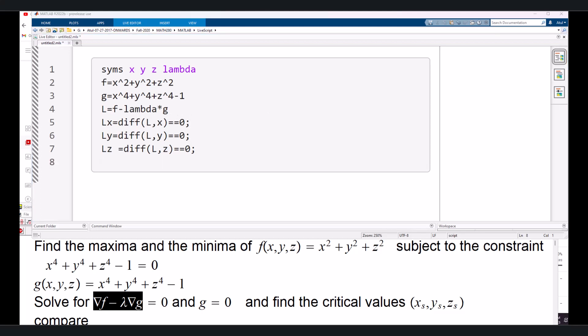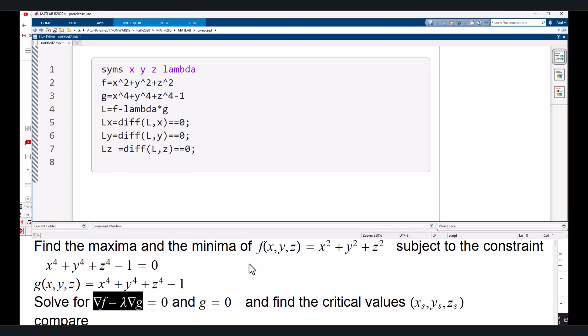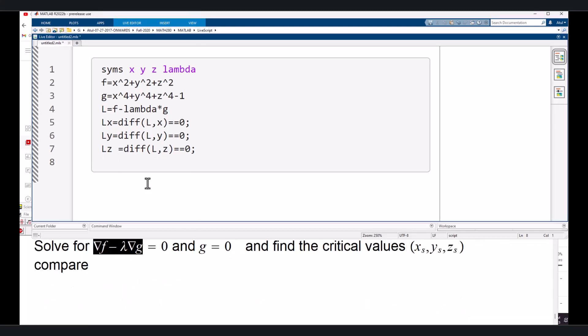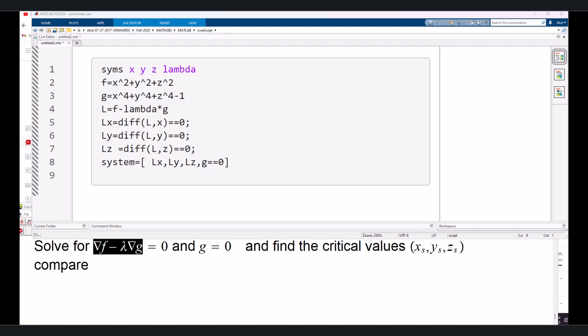And of course, then we have another one to solve. That is, g equals 0. So what we are going to do is that we are going to ask it to take a system in which what we have is we got these three equations. And the fourth equation is the equation, the constraint, that is, g equals 0.